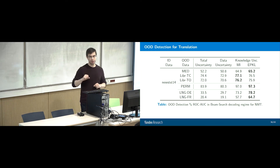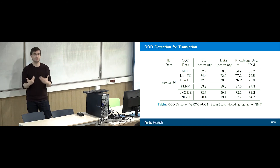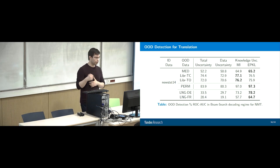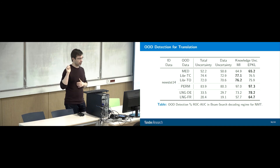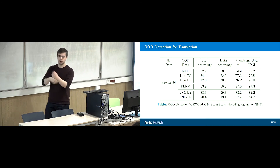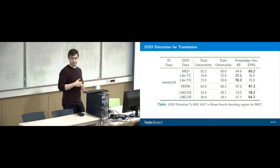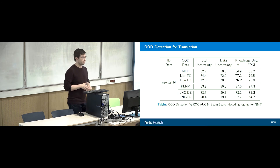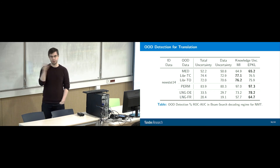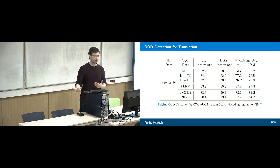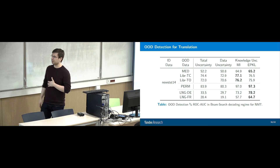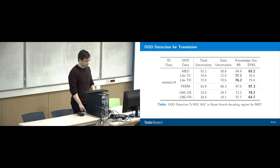When we give it LibriSpeech English data — spoken English versus written English — spoken and written language have a very big structural mismatch. We can detect that much better than the medical domain mismatch, and measures of knowledge uncertainty really help here. Finally, a noise experiment: we took news test data and permuted the order of symbols in the text. We can detect that really well using total uncertainty, but even better — almost perfectly — using knowledge uncertainty. Knowledge uncertainty means ensemble diversity.